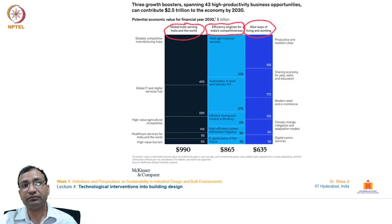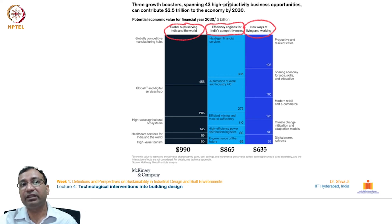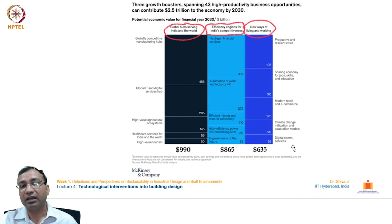Three growth boosters have been identified spanning 43 high-productivity business opportunities, contributing an overall estimate of around 2.5 trillion US dollars to the economy by year 2030 — a huge volume. If India continues this pace of GDP growth, it may surpass several larger countries that have conventionally held top numbers in economic growth.